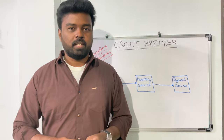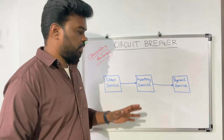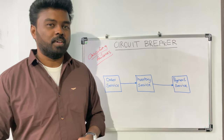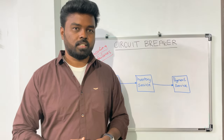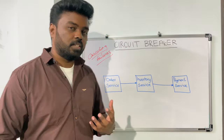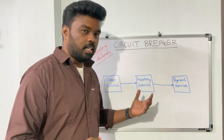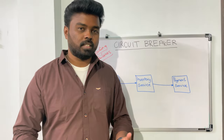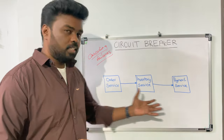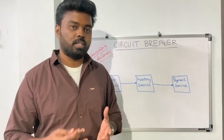Let me explain the concept of cascading failures with a simple example. Assume we are building an e-commerce application with several services — an order service, an inventory service, and a payment service. In a typical use case where a customer is placing an order, the order service receives the request, talks to the inventory service to check whether the product is available, and then the inventory service talks to the payment service to check whether the customer has enough credit. So to achieve that single transaction, these three services have to talk to each other.